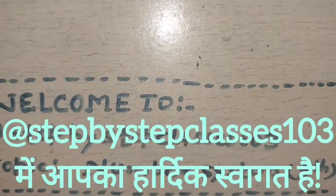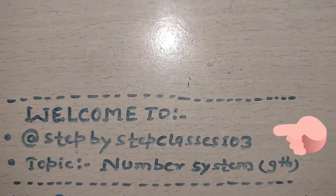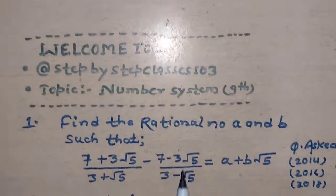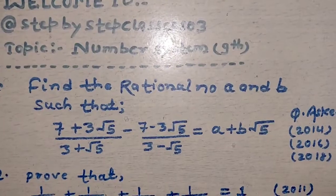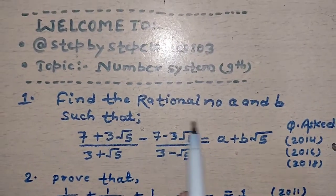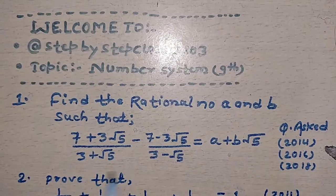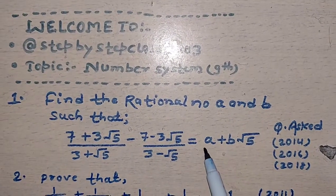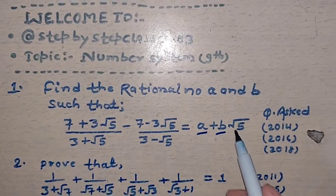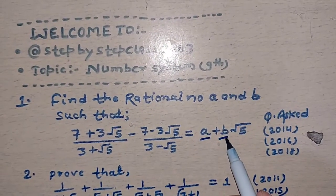Good morning everyone, welcome to Step-by-Step Classes. Today's topic is Number System. In this number system, we will find the rational numbers a and b. The question is given where a is a rational number and b is a rational number which is multiplied with root 5.